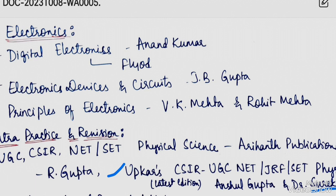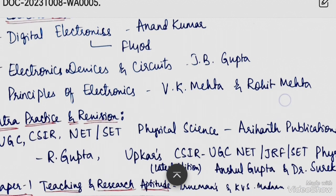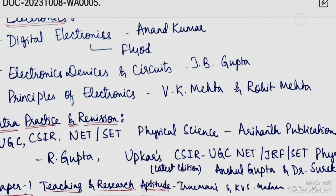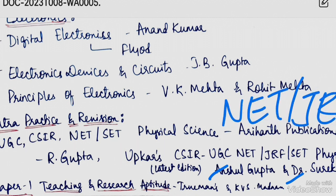For the last one month before the exam, focus on Paper 1. Recommended books for Teaching and Research Aptitude are Teaching and Research Aptitude by Truman's, and Teaching and Research Aptitude by K.B.S. Madan. Truman's book is a very good book with easy-to-understand content.